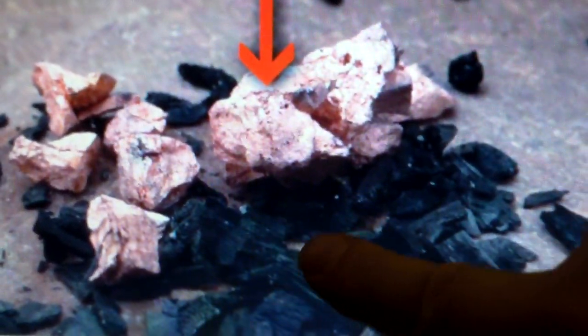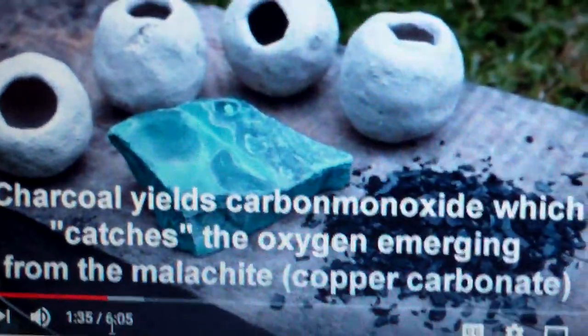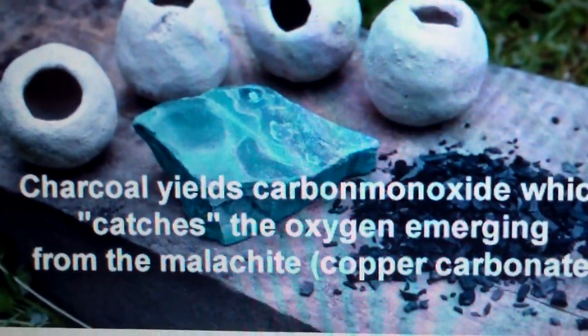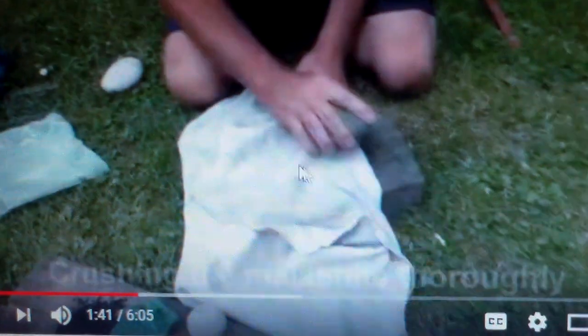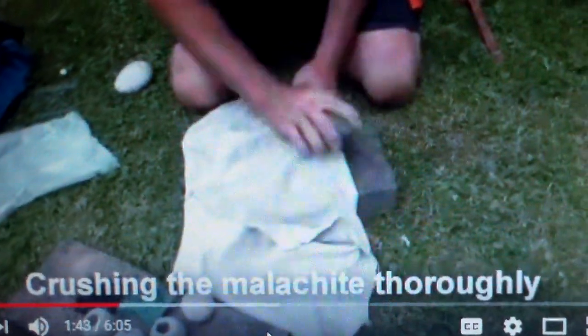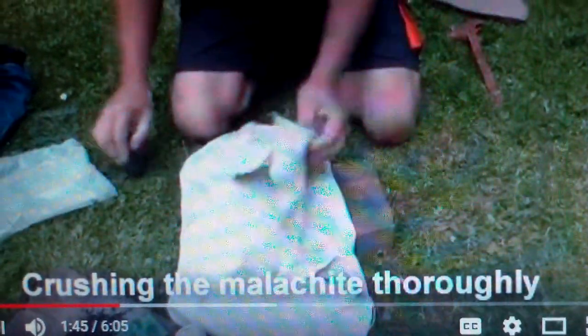The charcoal, when it's inside the vestibule with the green stuff, the malachite, actually takes the oxygen away from the copper oxide, which is the green stuff. It takes the oxygen away from the green stuff, which is the copper oxide, and then turns it into regular copper, which is really interesting.